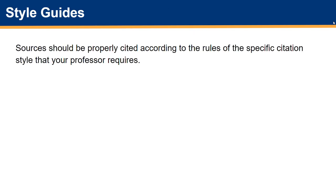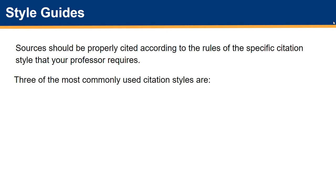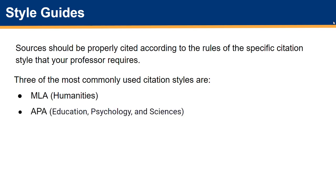Sources should be properly cited according to the rules of the specific citation style that your professor requires. While there are many different citation styles, three of the most commonly used are MLA, typically used for the humanities; APA, often used in the education, psychology, and sciences disciplines; and Chicago, that's typically used for business, history, and the fine arts.